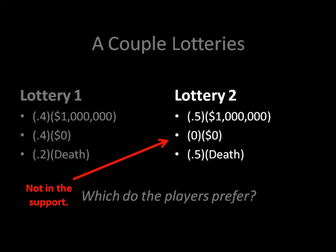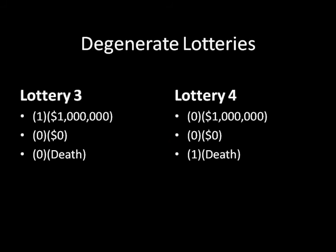The other thing I need to discuss is something called a degenerate lottery. Here are a couple of examples with lottery 3 and lottery 4. Lottery 3 is a degenerate lottery where with certainty you win a million dollars, and lottery 4 is a degenerate lottery where you die a painful death with certainty. So like before we were discussing outcomes that occur with certainty, we can actually express those as lotteries, and we just have a special name for them — we call them degenerate lotteries.